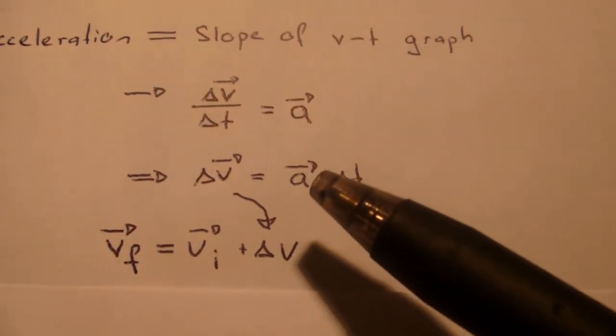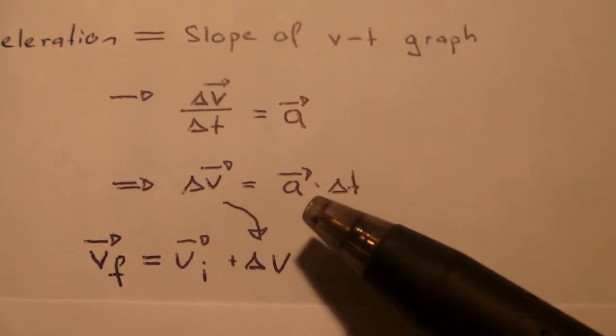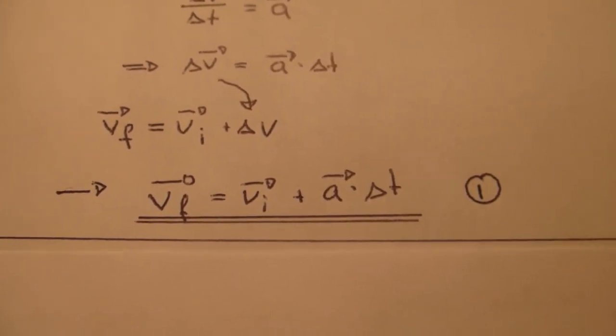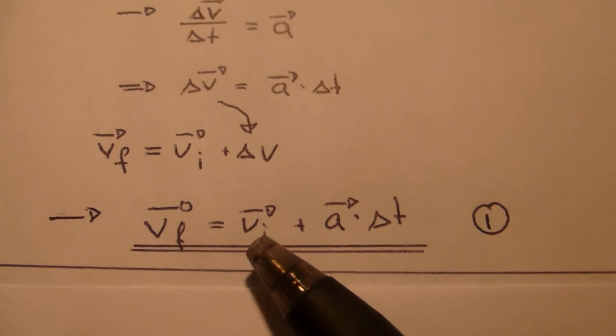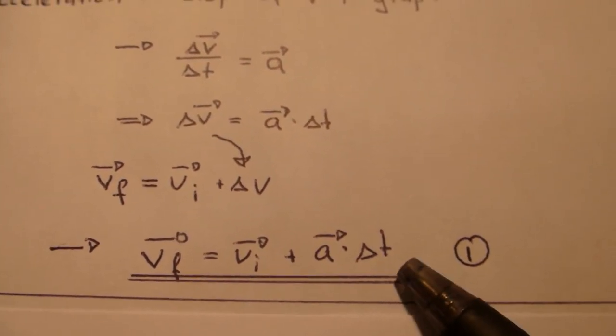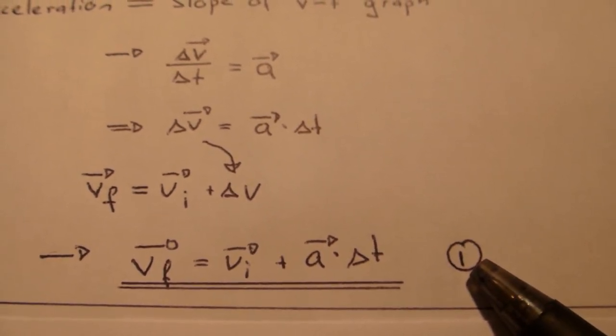We plug in our change in velocity equals a times Δt, and we get final velocity is initial velocity plus a times Δt, which is our first equation.